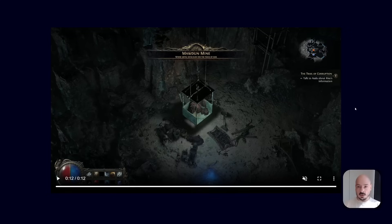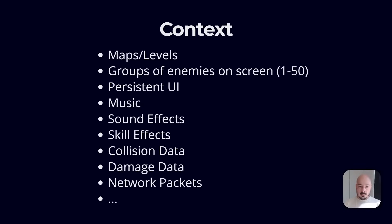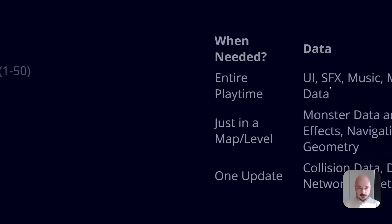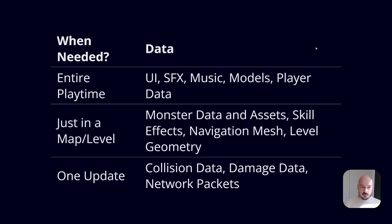Okay with all that context about the game that we're making, what do we know? Well, if we were making this kind of game, we've got maps and levels, we've got groups of enemies on the screen — let's say between one and fifty, or whatever the number is — there's network packets because it's an online game, there's a million other things. But these are the things we can think about in context.